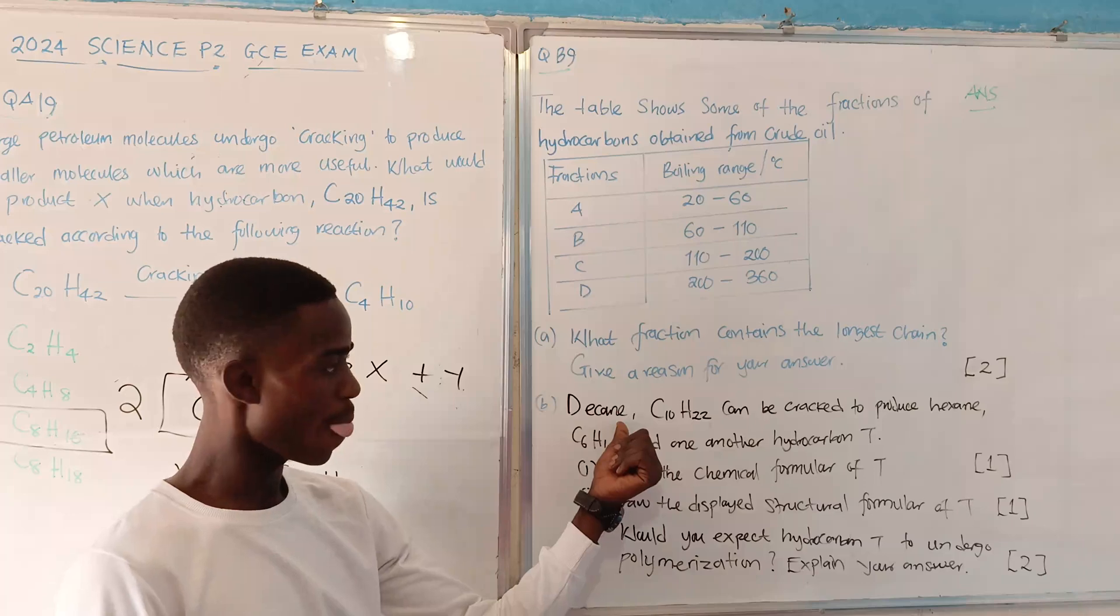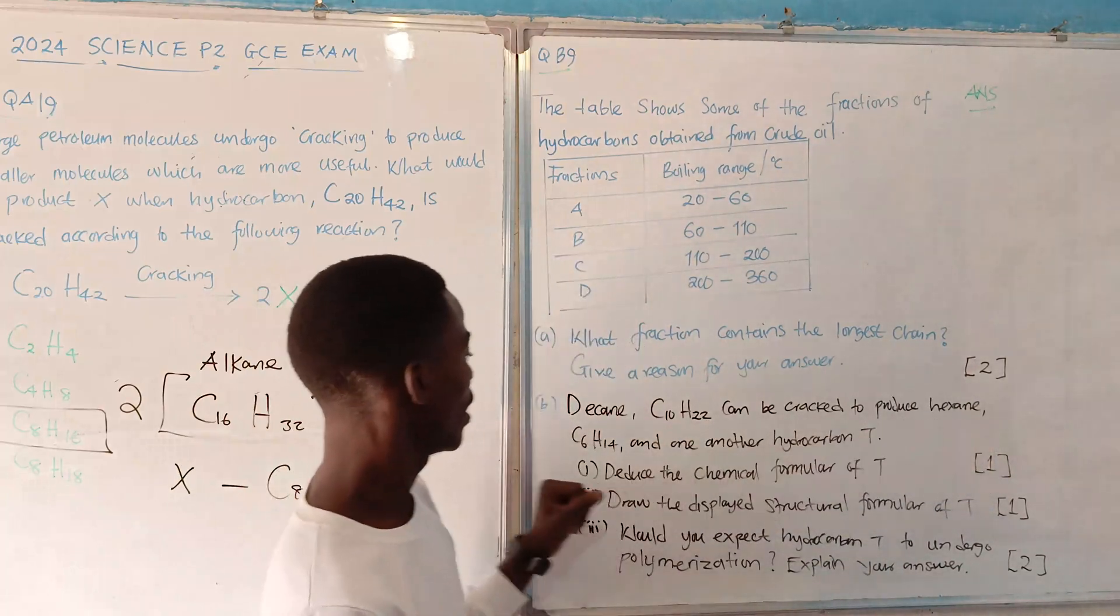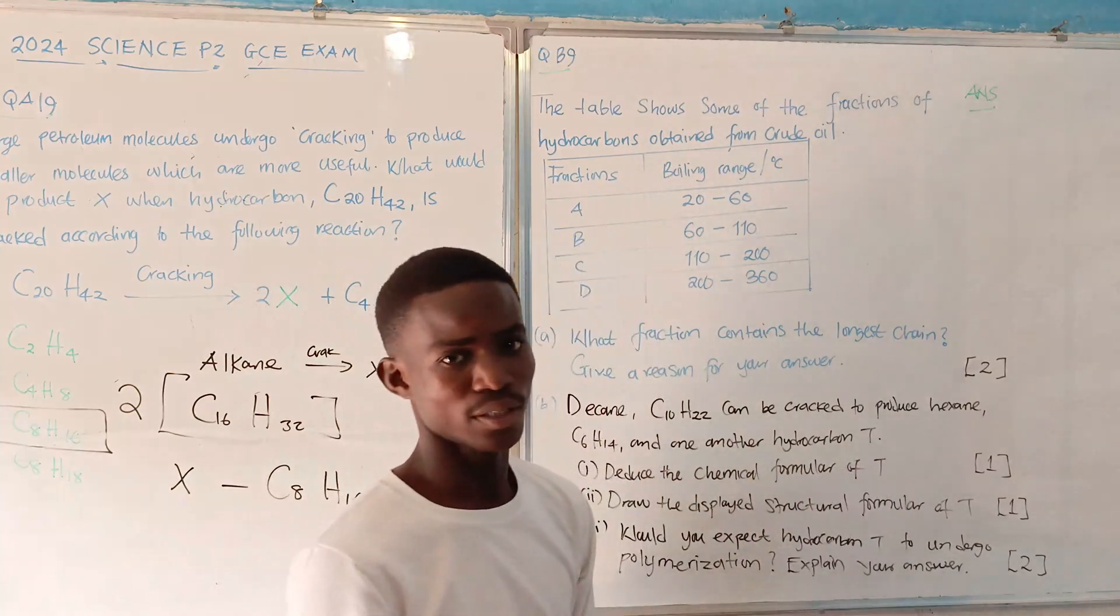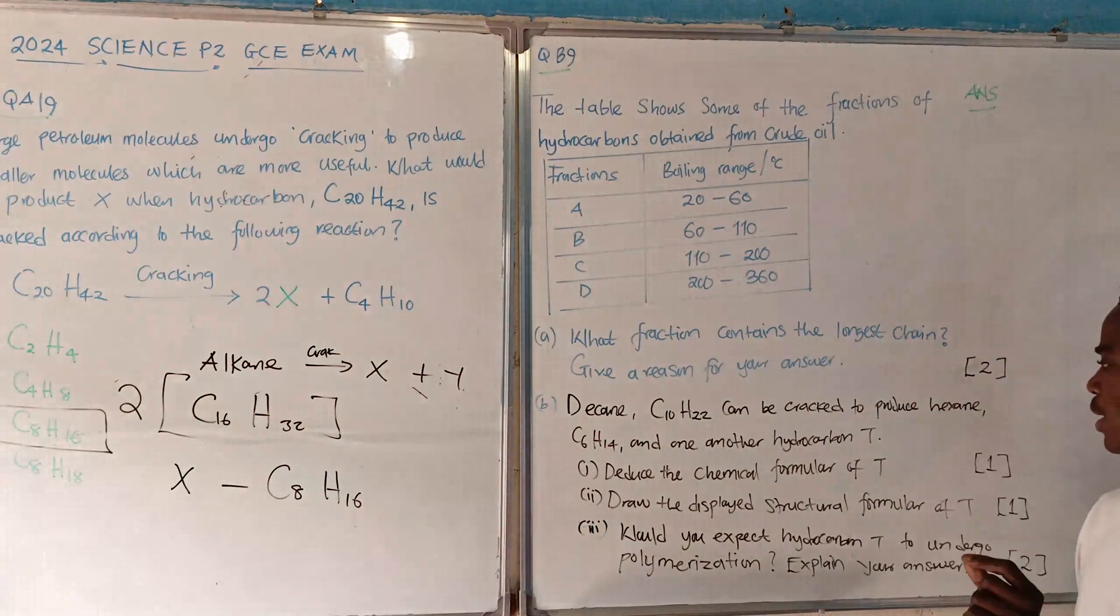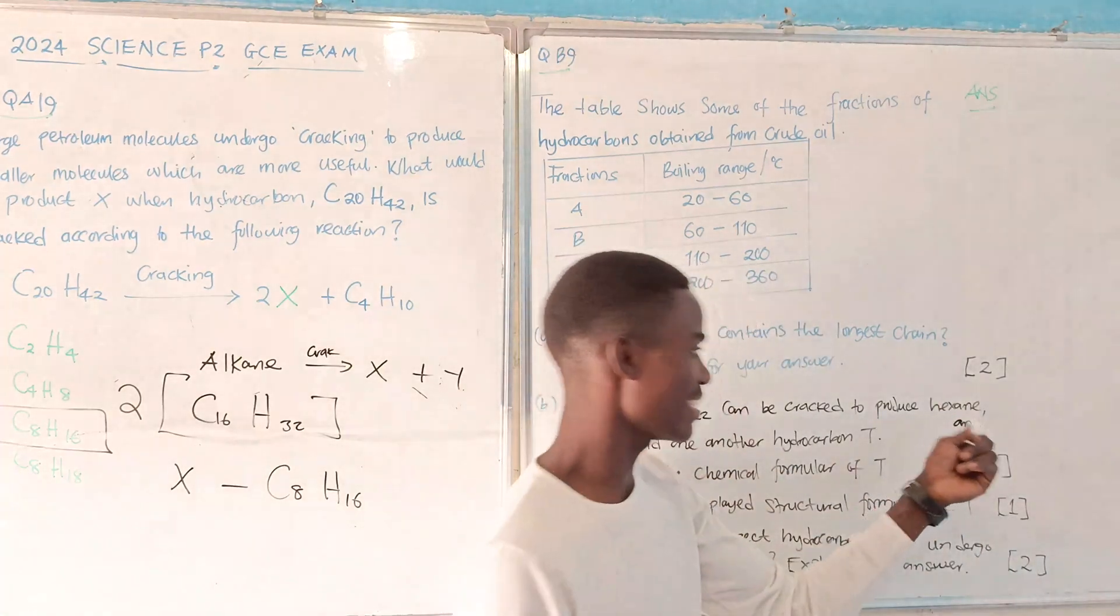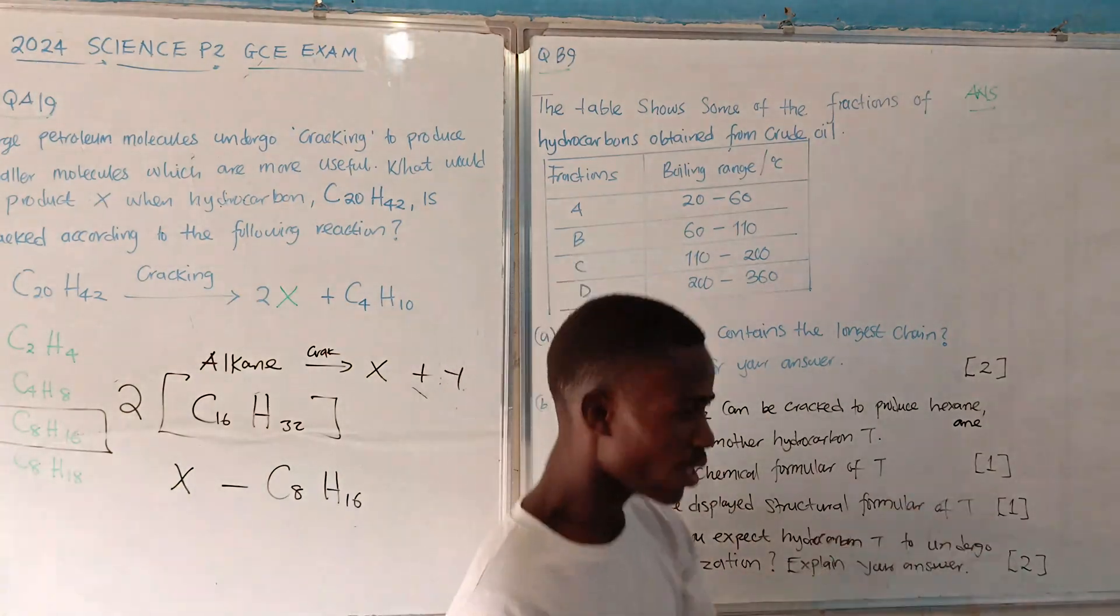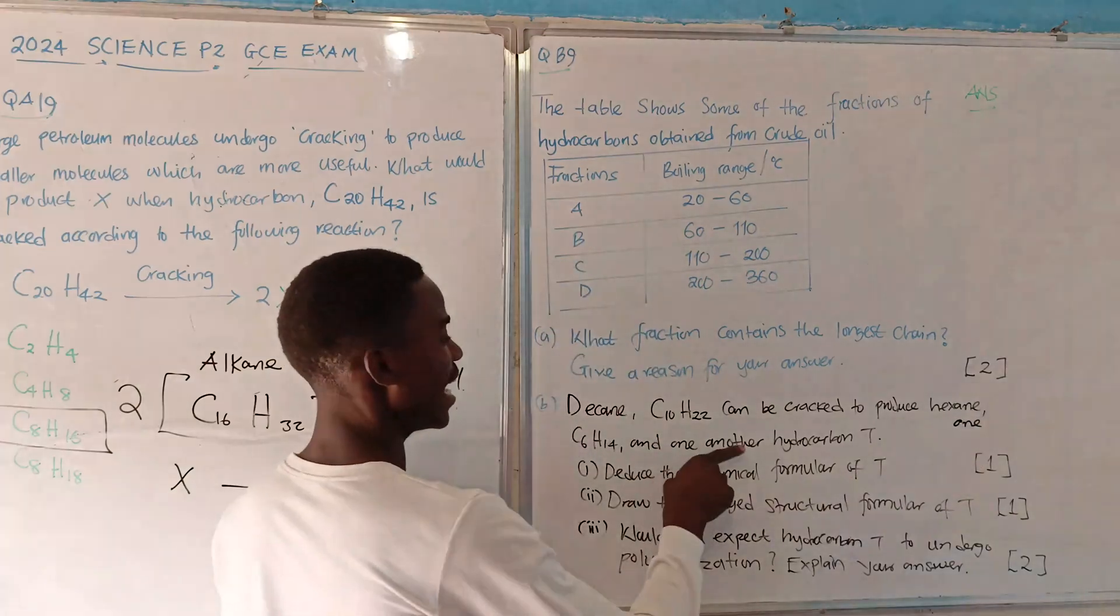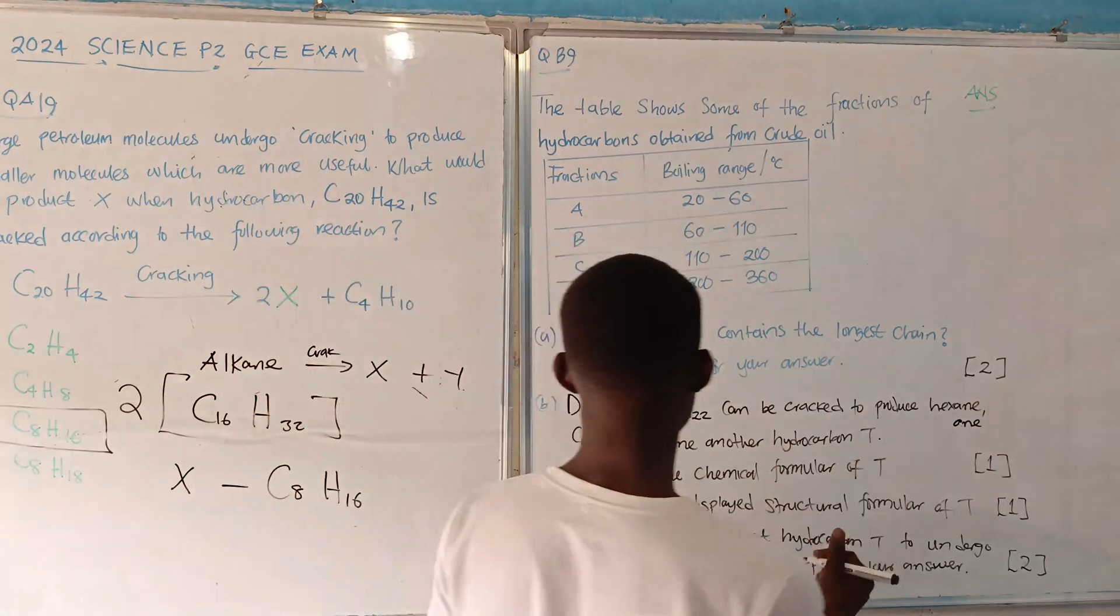Decane C10H22 can be cracked to produce hexane, this is the chemical formula of hexane, and one another hydrocarbon T. Remember, all members of alkane end with this, A-N-E. So, this hexane is an alkane. Since this is an alkane, meaning that another hydrocarbon T is an alkene.